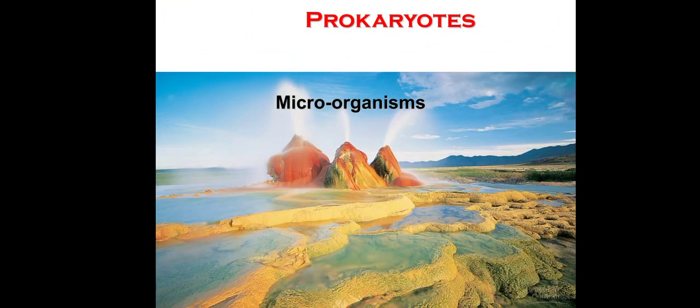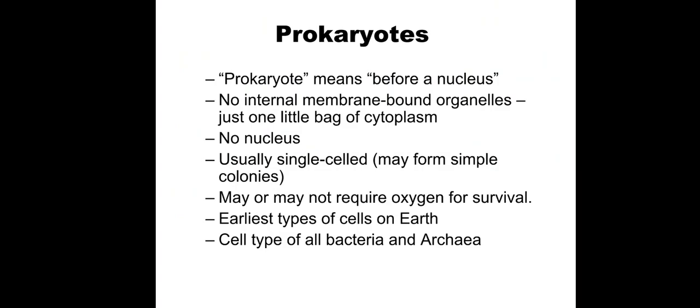Now we will discuss prokaryotes or microorganisms. Micro means small or tiny, because they are small or single-cellular organisms. We cannot see a single cell without the help of a microscope — we cannot see them with our naked eye. We need a microscope to see them, so they are called microorganisms. All prokaryotes are microorganisms.